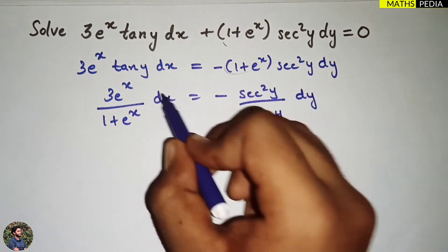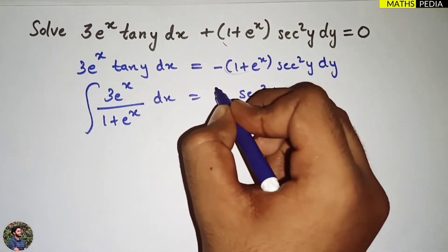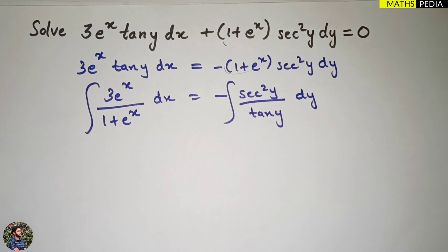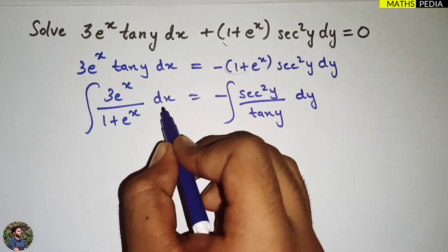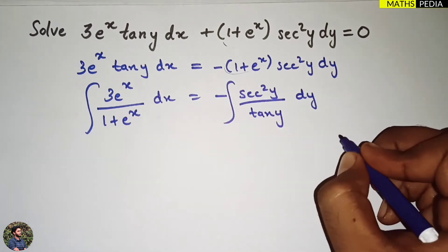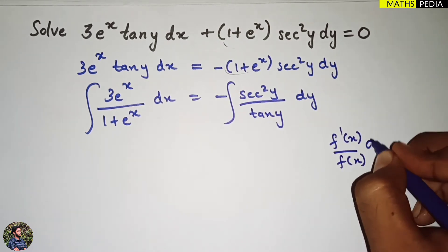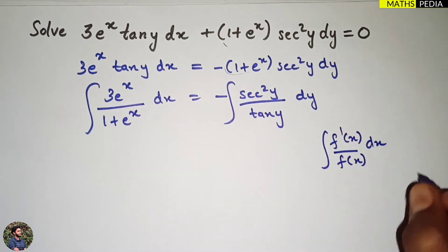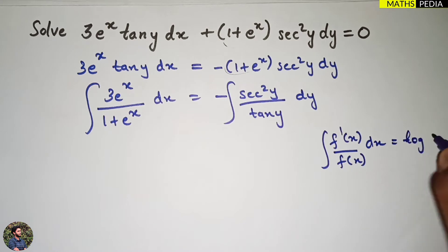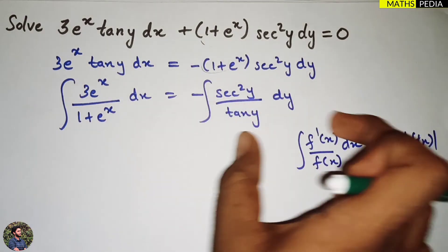Now we can integrate both sides. Integrating both sides — the minus can be kept outside. We have 3e^x over (1 + e^x) dx. To integrate this part, we use the formula: the integral of f'(x) / f(x) dx equals log f(x). Comparing both sides, this formula is directly applicable.